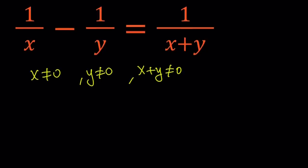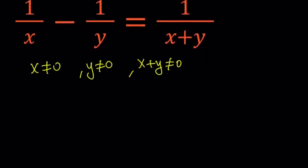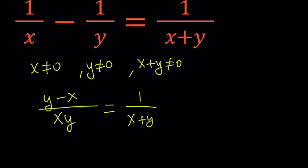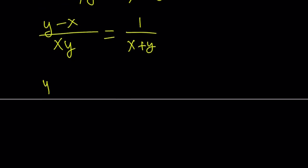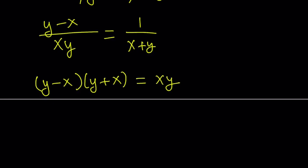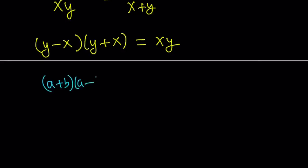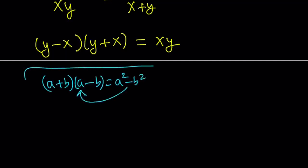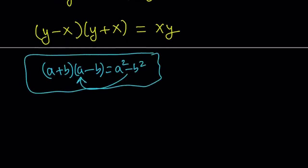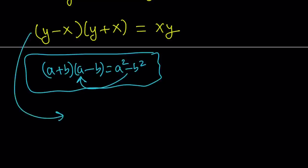Under those conditions, let's go ahead and make a common denominator. That gives us y minus x divided by xy equals 1 over x plus y. Now let's cross multiply, writing x plus y as y plus x so we can take advantage of difference of two squares. Difference of two squares is a very important identity — if you multiply a plus b and a minus b you get a squared minus b squared. Using that, we can write this product as y squared minus x squared, and that equals xy.